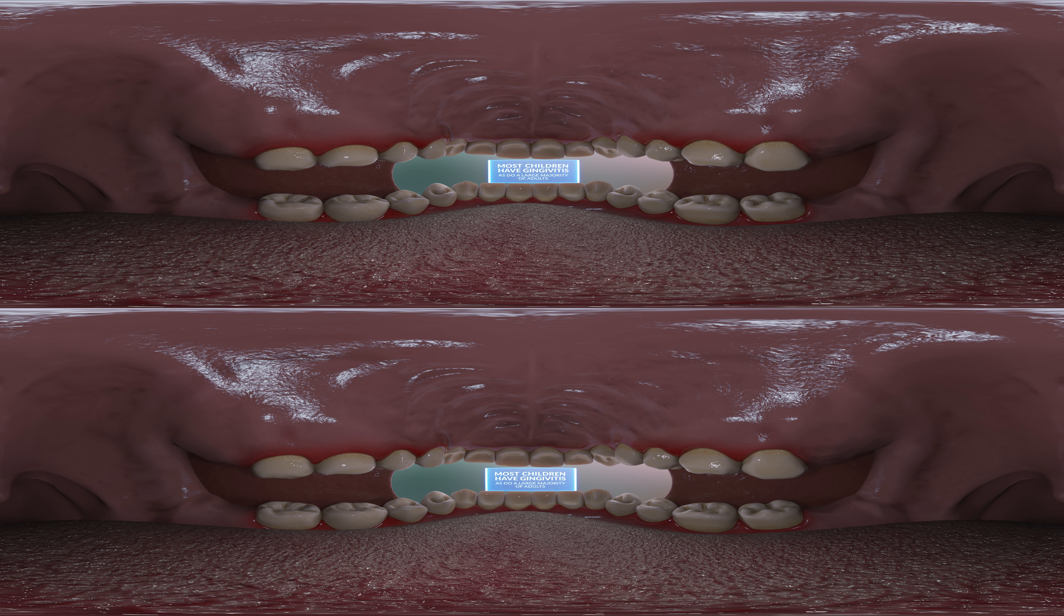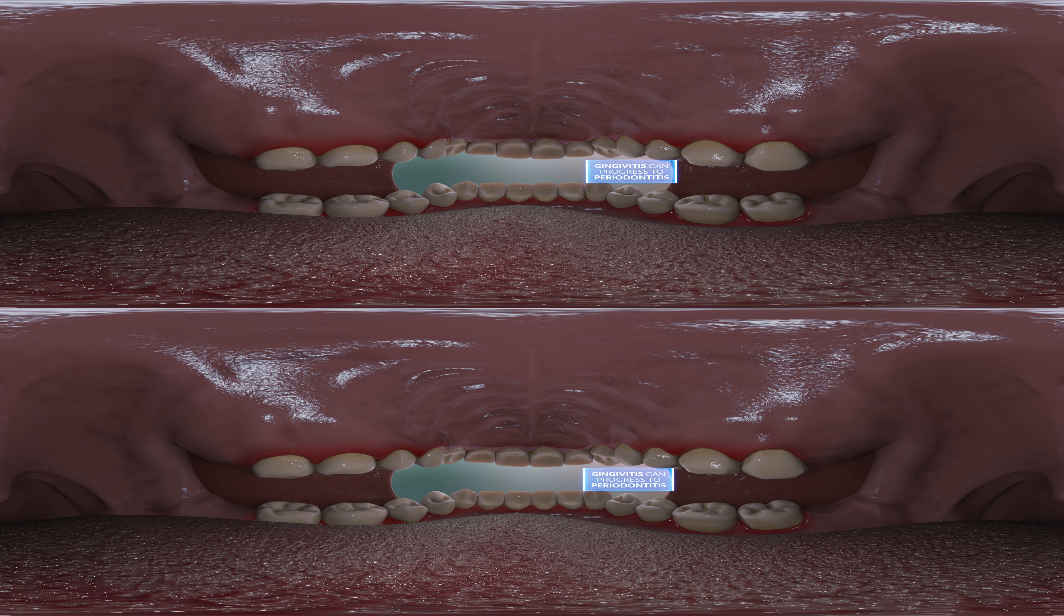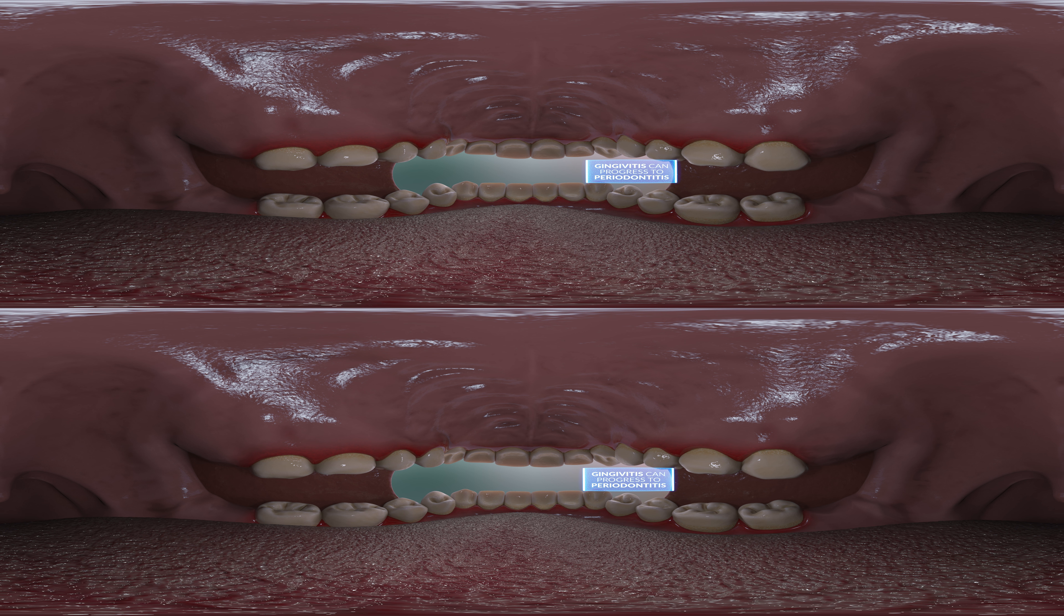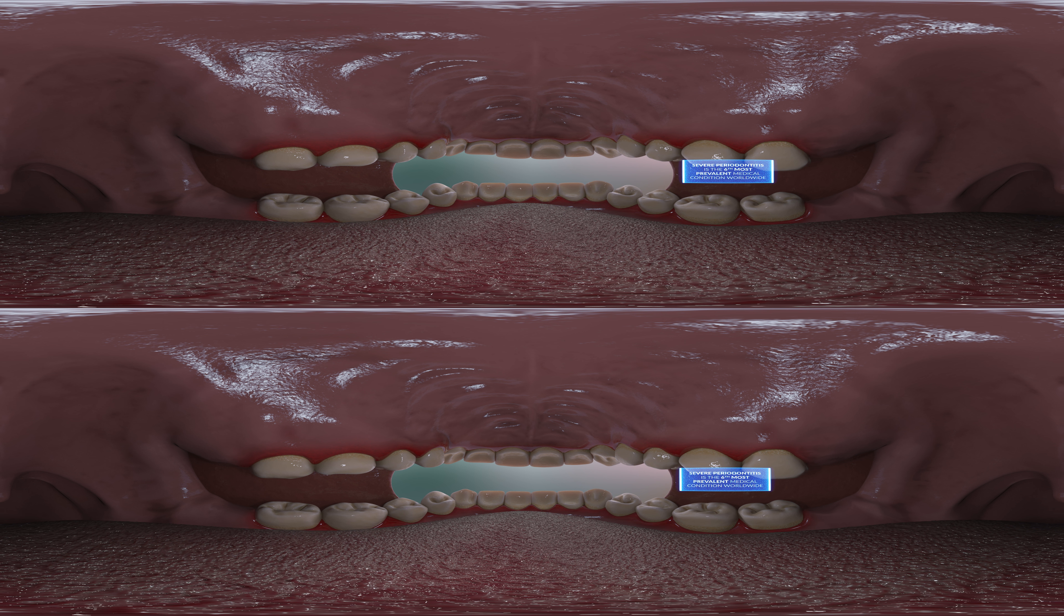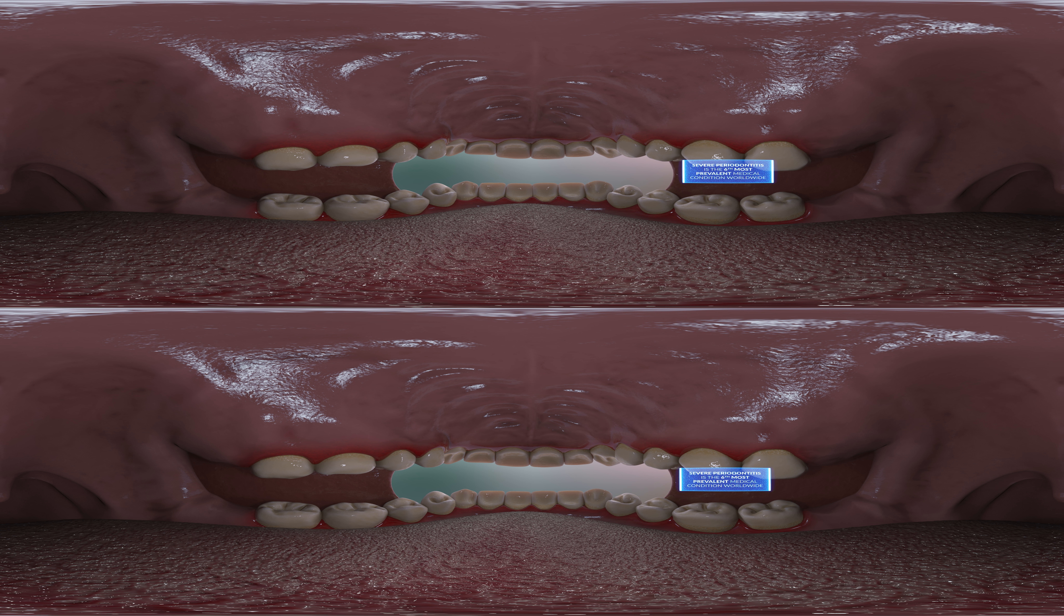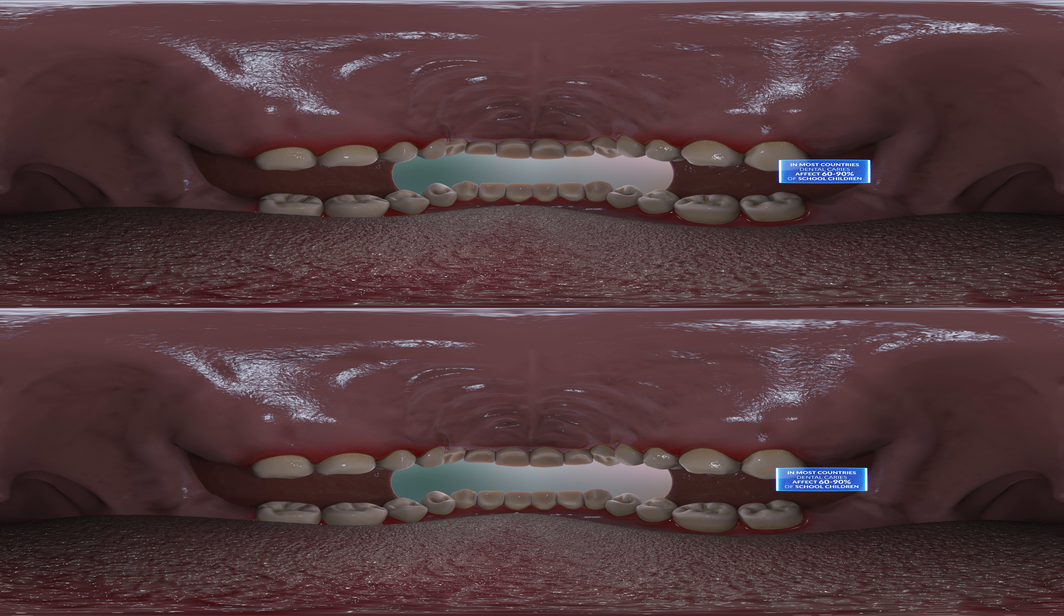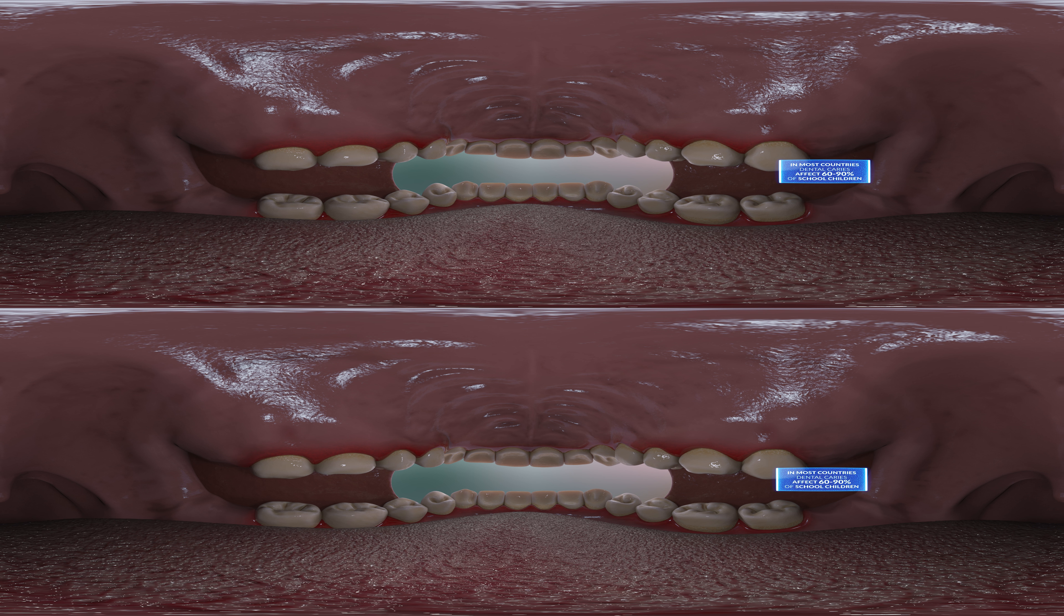If untreated, gingivitis can progress to periodontitis. Severe periodontitis is the sixth most prevalent medical condition worldwide. In most countries, dental caries affect 60 to 90% of schoolchildren.